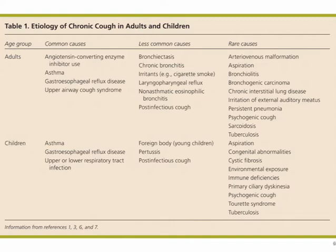Less common causes include COPD and post-infectious cough, which is actually fairly common. Things like TB — is the patient at high risk in terms of exposure? In children, the big one when you hear a chronic cough is asthma: is it worse when they exercise, worse with allergens, or worse in the cold? Reflux is another one to consider in kids. Upper or lower respiratory tract infections are big ones, and sometimes a cough can persist long after the infection as well.